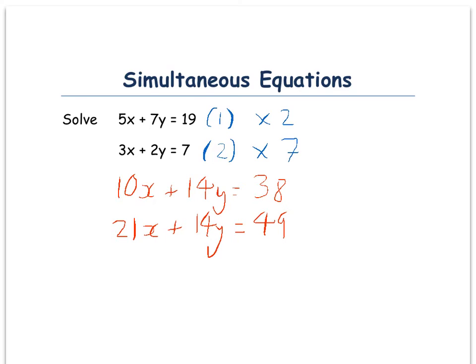We can now eliminate them by, because they're both add, we're going to subtract them. Now, if you had one which was a positive and one a negative, you would add the two together, but because they're both the same, you subtract. The rule is, the same you subtract, different you add.